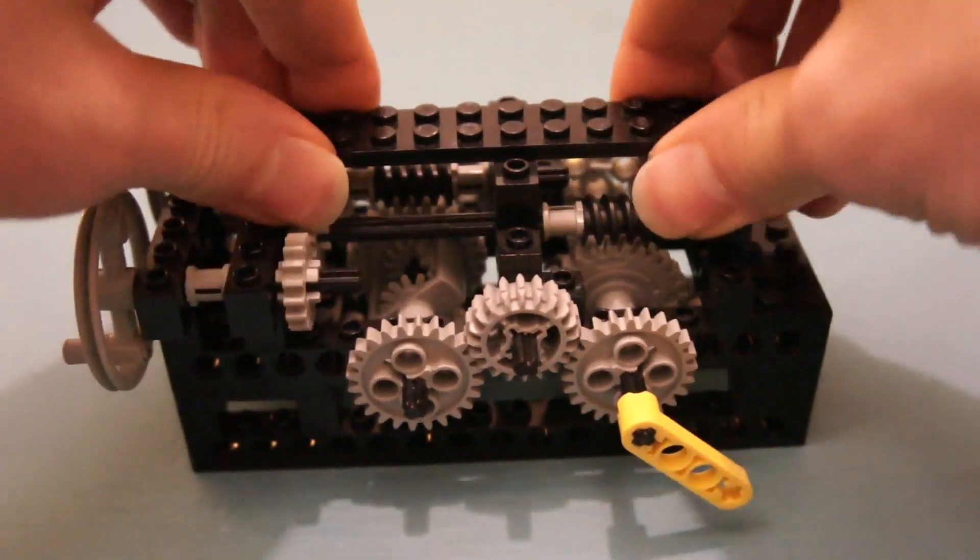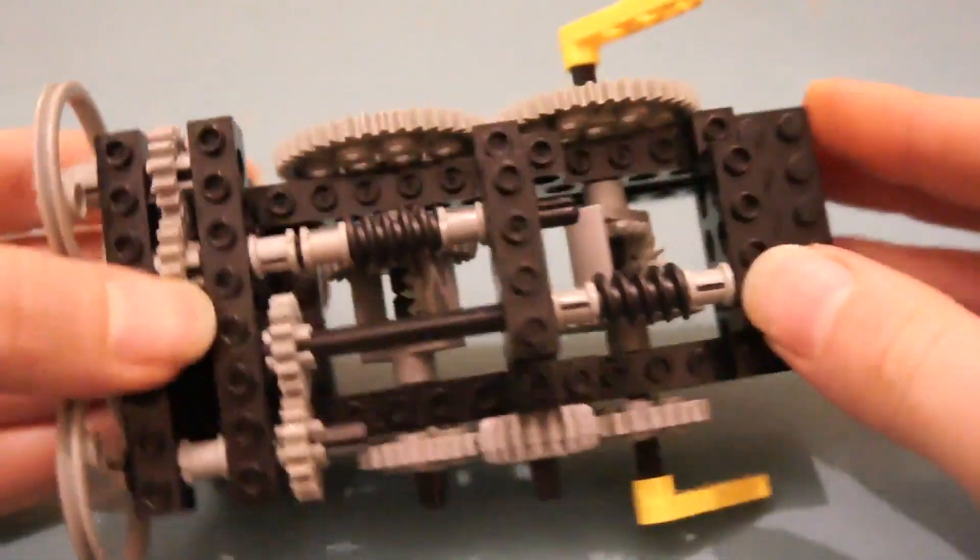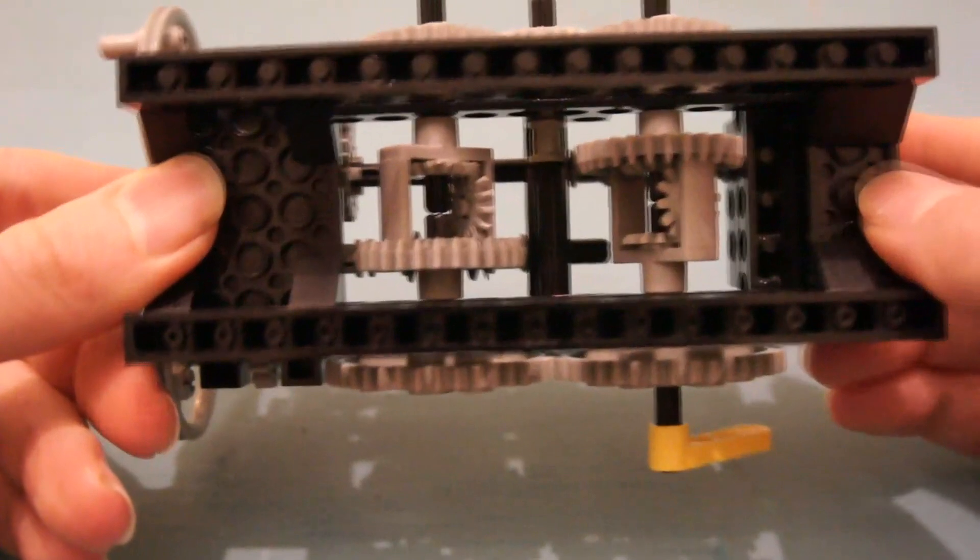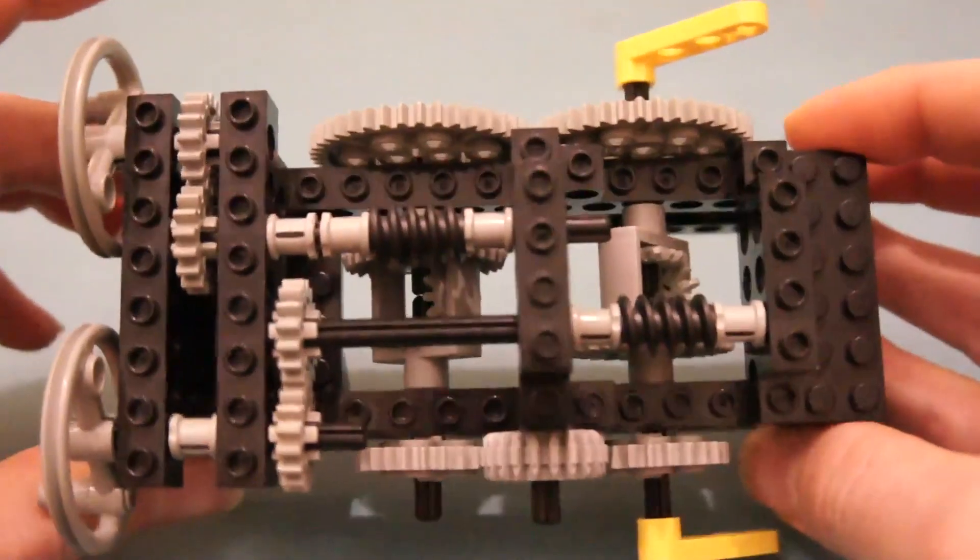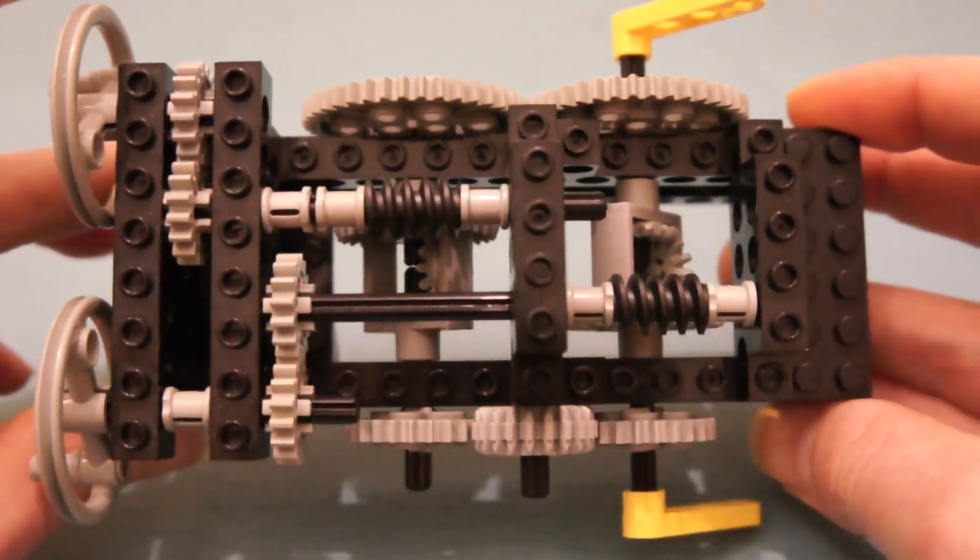So if we take a look at what's underneath, we see that at the heart we have two differentials and that gives its other name. Sometimes this is called a dual differential drive or a double differential drive.